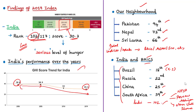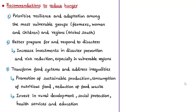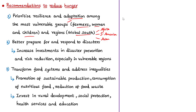The Global Hunger Index report gives several recommendations to reduce hunger. First, prioritize resilience and adaptation among the most vulnerable groups and regions, particularly the Global South covering Africa, South America, and most Asian countries. Investment should go to small-scale farmers, women, and children through actions like diversifying agricultural production, improving farmers' access to resources and markets, and creating non-agricultural jobs in rural areas.